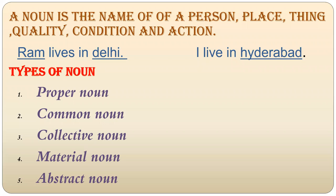What is a noun? A noun is the name of a person, place, or thing. This is what we have studied from childhood. If any person, place, quality, condition, or action — we call it a noun. For example, Ram lives in Delhi. What is the noun here? Ram and Delhi.